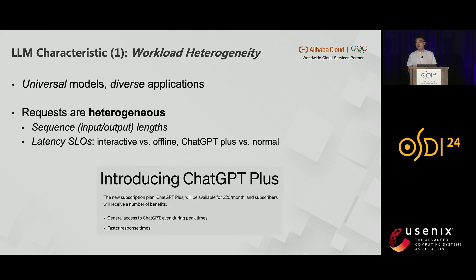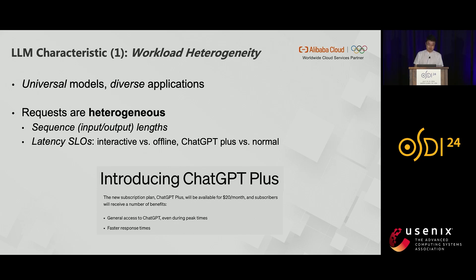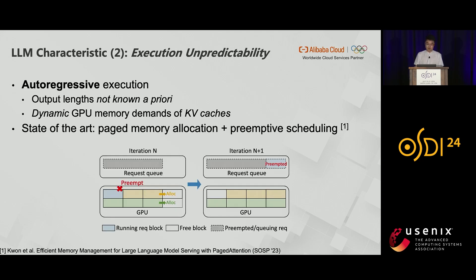Another aspect is latency SLOs. For example, interactive applications like chatbots or personal assistants would expect lower latencies than offline analysis tasks like summarizing an article. Another real product example is that OpenAI introduced a subscription plan called ChatGPT Plus, which promises faster responses, namely lower latencies. The heterogeneity of requests becomes more challenging when combined with another characteristic — the unpredictable autoregressive execution.